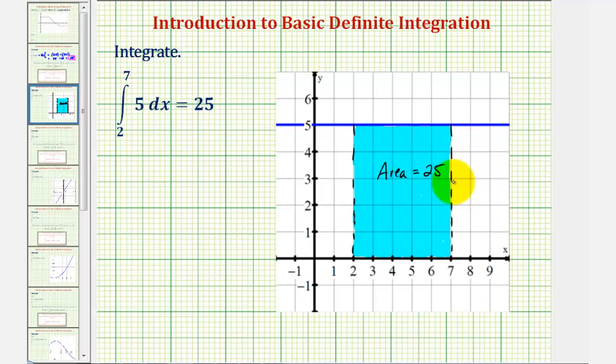And of course, in this case, we can check it. Notice how we have a five by five square giving us an area of 25 square units. I hope you found this helpful.